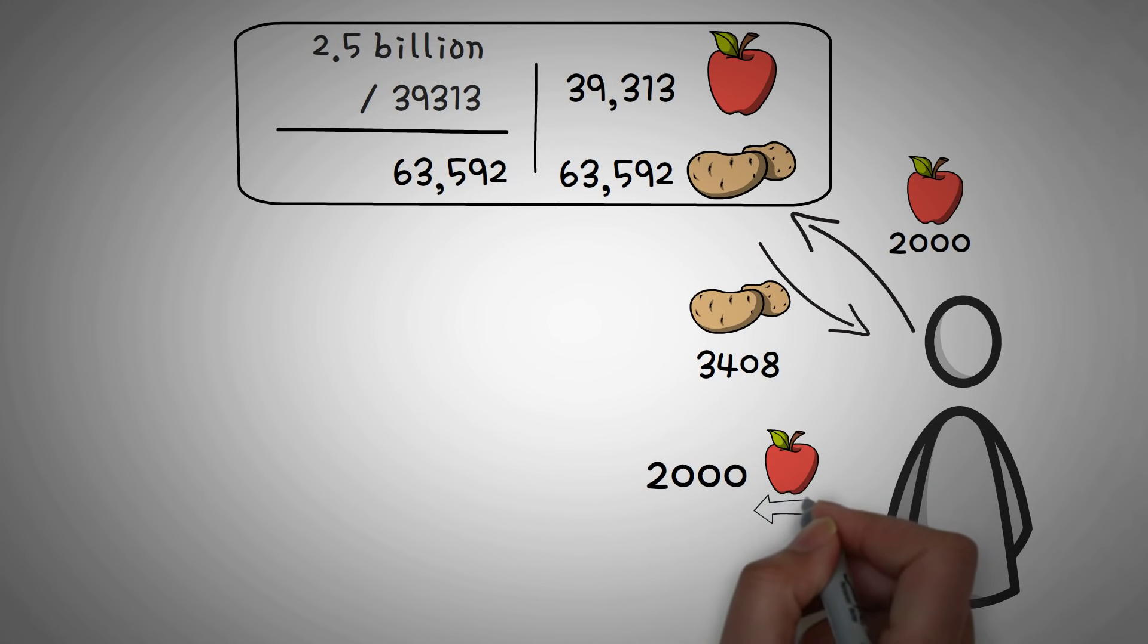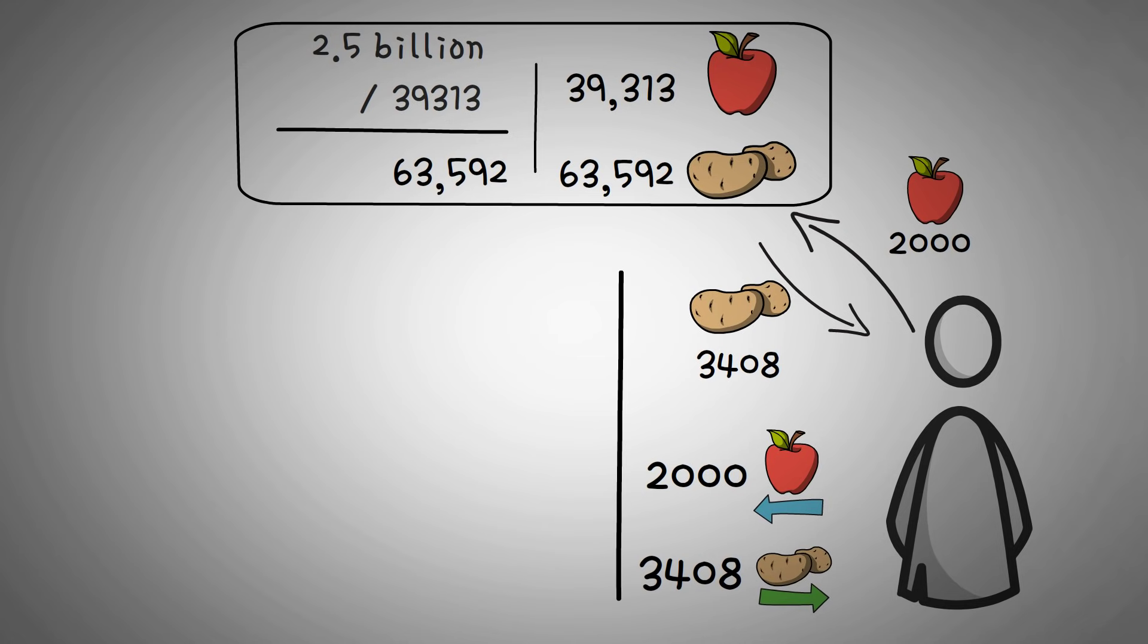So in essence, the farmer gave 2,000 apples, and got 3,408 potatoes, because at the time, his apples were very valuable.